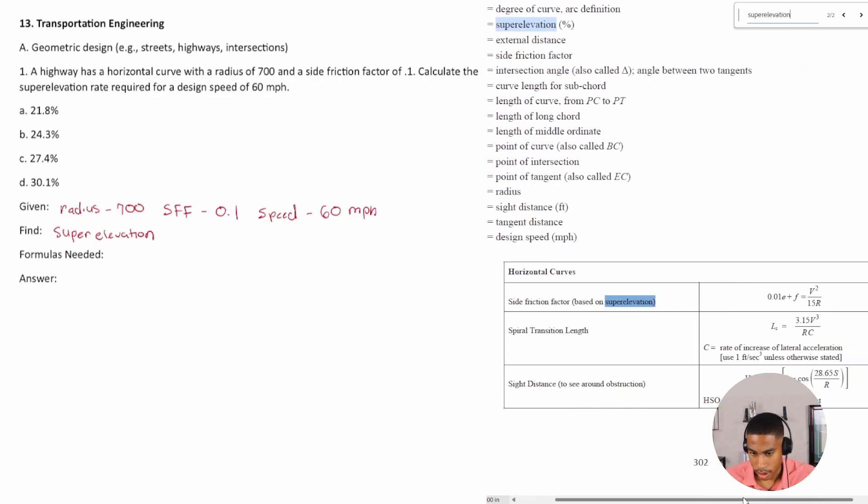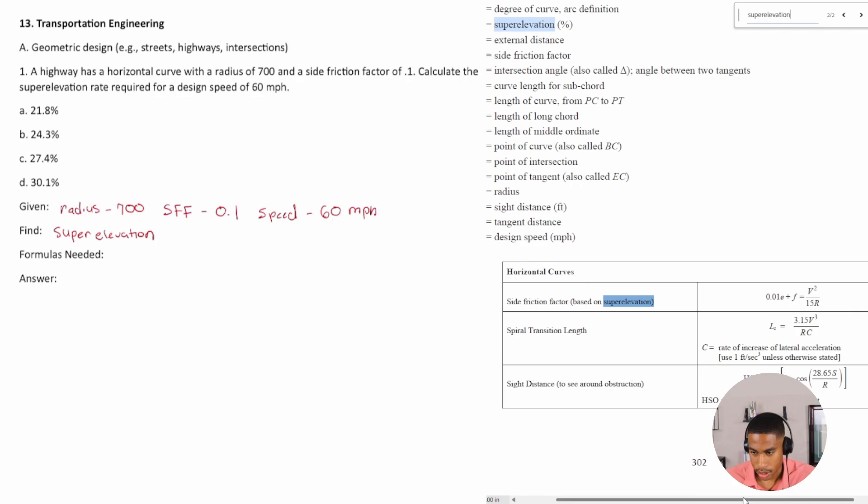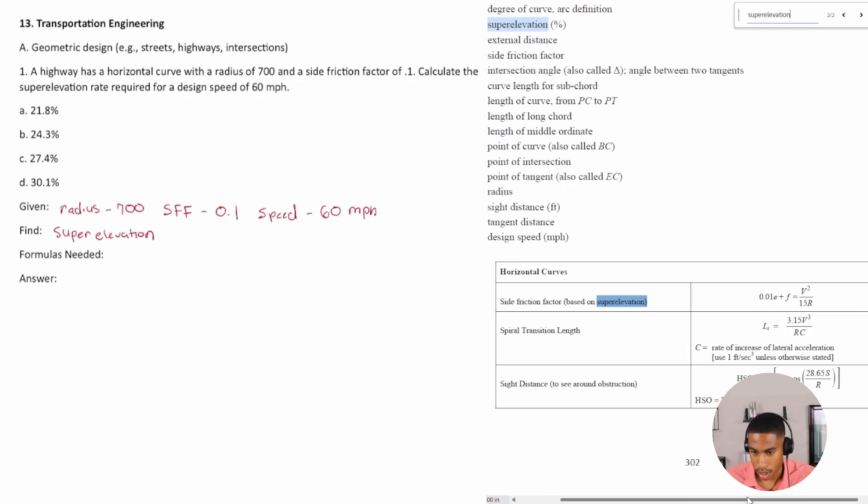All right, so in the handbook it says the side friction factor based on super elevation. For this particular problem we need F, which is side friction factor, we need V, which is design speed. It looks like we have a side friction factor already which is 0.1, we have speed, and then R, which is radius. So it looks like we have all the various variables we need to solve for this problem.